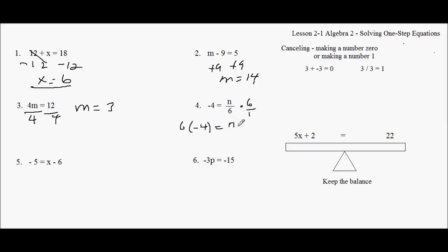It's really N times, you could say N times 6, because multiplication is commutative. I can switch these. I can put it like this. And this is 1. So I get minus 24, equals N.